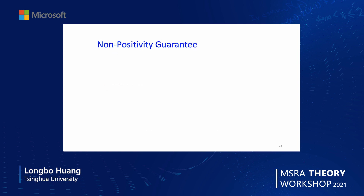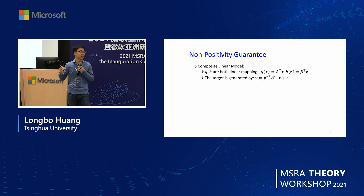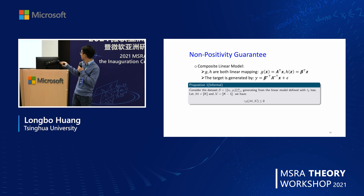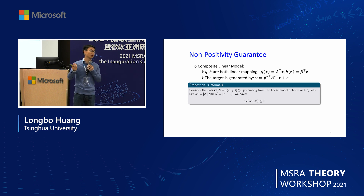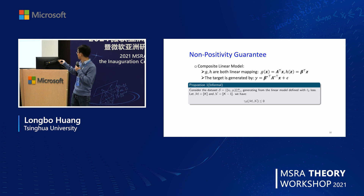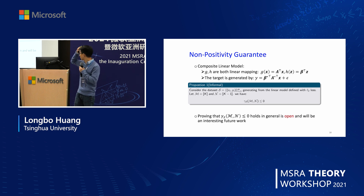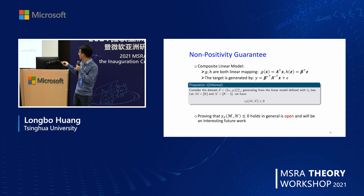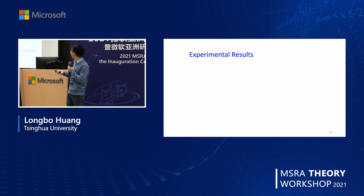We also examine a special case with a composite linear model, where both the latent mapping and the task mapping are linear — an approximation since in practice usually one is a neural network. Under this model with L2 loss, we can rigorously prove that using all k modalities is better than using k minus one. Proving this holds in general remains an open problem.